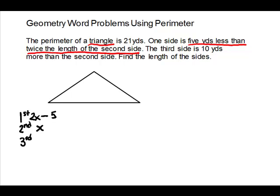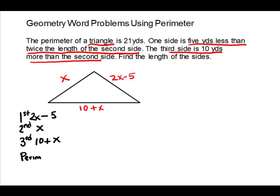For the third side: 10 yards more than the second side — more than means to add. So you write x plus 10. Let's label our triangle: one side is x, another is 2x minus 5, and the third is x plus 10. The other quantity in the problem is the perimeter, which equals 21 yards.